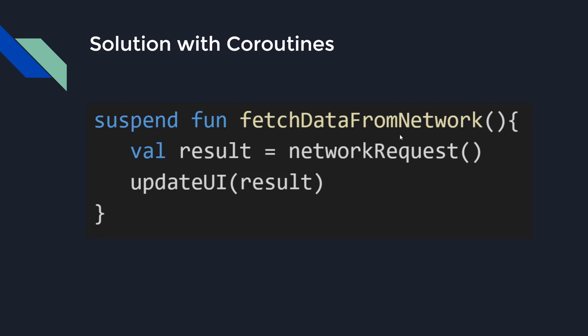Here you can consider a coroutine as a separate thread. Now the code seems synchronous and we may think that it will block our main thread, but it won't. Suspend means the function can suspend and resume. It is the same as writing callbacks but in a simpler and cleaner way. In this function, the network request will be called asynchronously in the IO thread and we will get the result and process it in the main thread. So here the updateUI call is our callback — it looks synchronous but it is actually asynchronous.